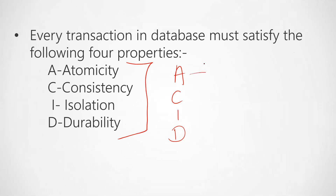Atomicity means that whatever transaction we perform in a database, the transaction may either be committed or rolled back. If we perform some transaction, it will not be left in a partial state — the transaction will either be completely successful, or if it is not successful, it will be rolled back. Every transaction must have an atomic value.